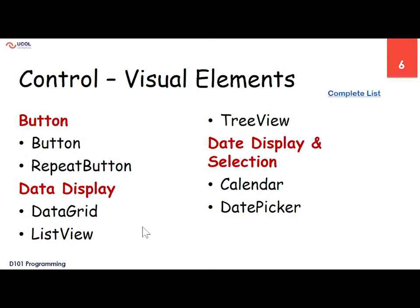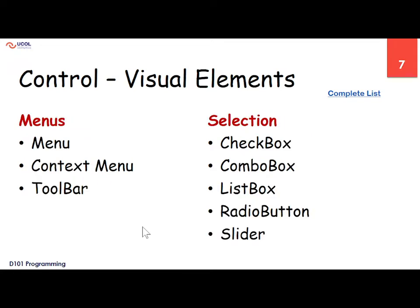Then we have buttons — the user can click or tap depending on whether it's a touch screen or a simple screen. We also have data grids, calendar, date picker, menus — file menu, edit menu — on the top bar, and context menus. We can write implementation so that once a specific menu item is clicked, the code defines what the program does.